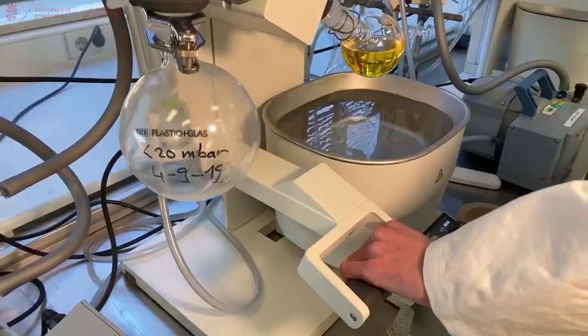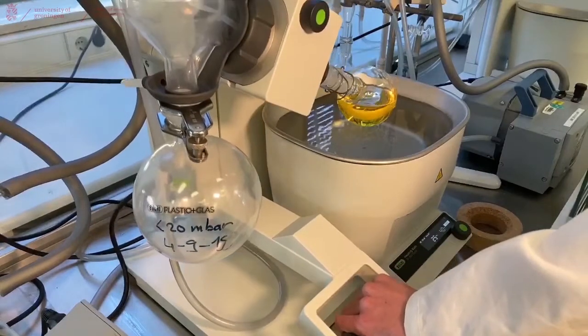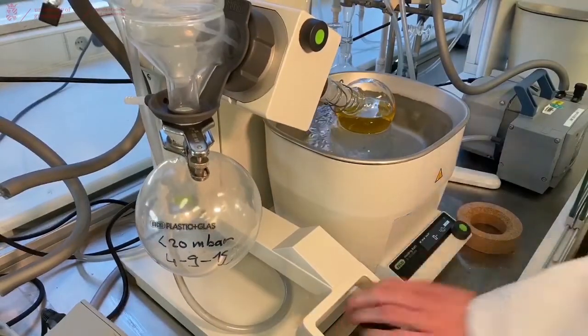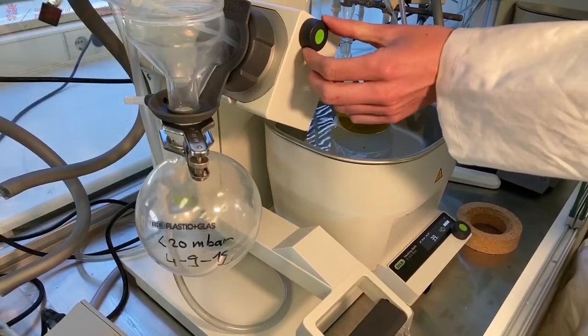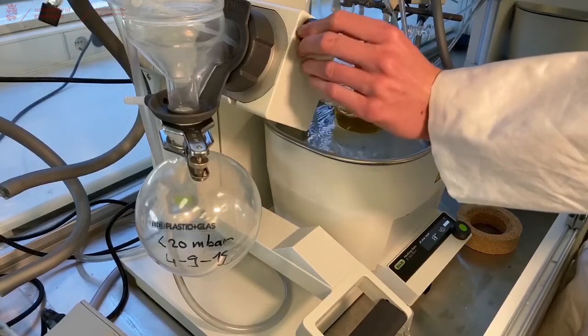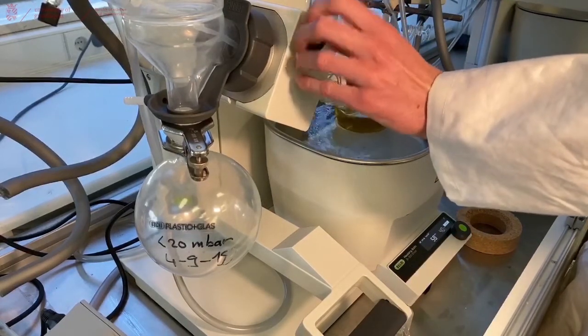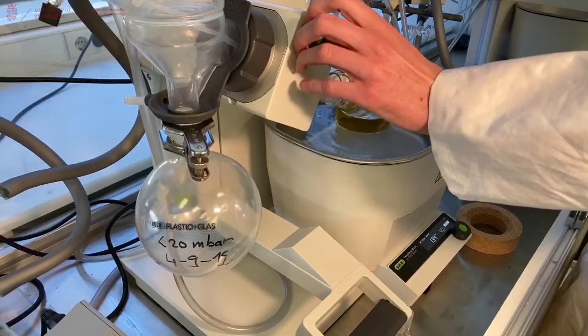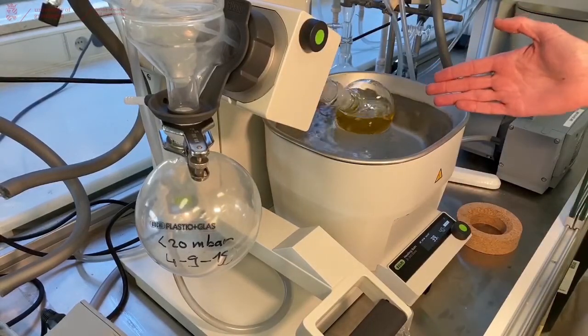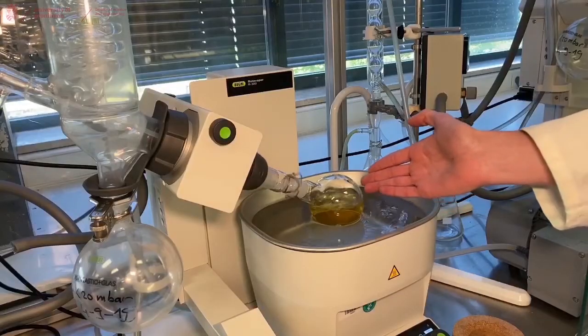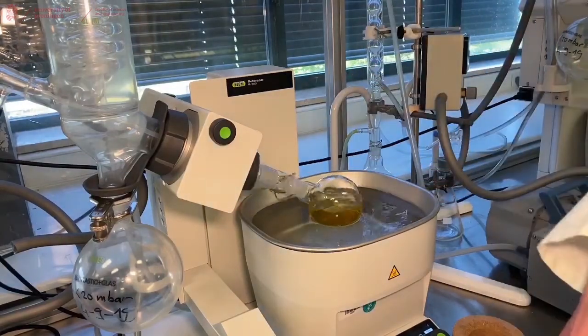Most Rotary Evaporators either have a handle, electric or manual, and lower your flask until it hits the water and turn on the rotation. Make sure that it is rotating fast enough, but not so fast that the liquid will actually go into the connector.